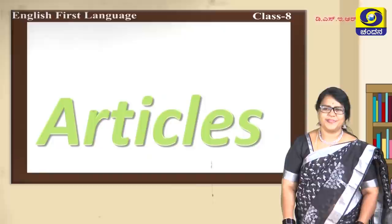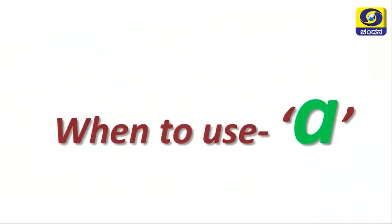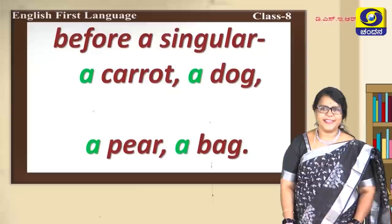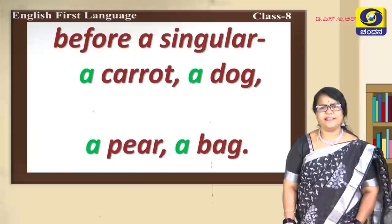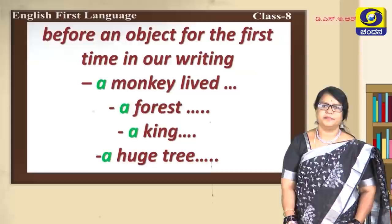What are articles? Let's see one by one. When to use 'a': 'a' is used before a singular noun — a carrot, a dog, a pear, a bag. Likewise there are many things you can use 'a' before a singular noun.